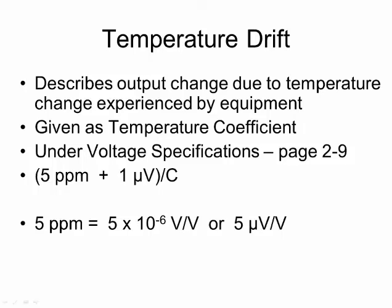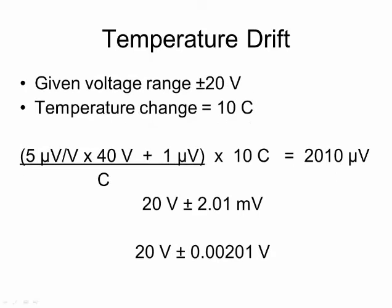Where does parts per million come into play? The 5 parts per million can be written as 5 volts divided by 1 million volts. We need to know the plus-minus voltage range of the input. Let's assume we are using a PDAC-55 range of plus-minus 20 volts for a differential input. When using a plus-minus range, the range span is the difference — in this case, 40 volts. Let's assume the equipment will experience a 10 degrees Celsius temperature change.